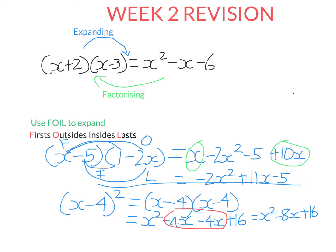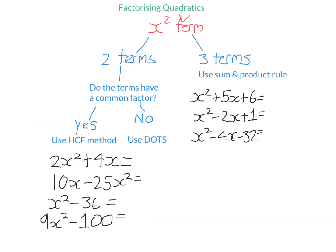Let's look now at the opposite of that, which is factorising. We need to be able to factorise quadratics. A quadratic is an expression with an X squared term. So how do you factorise them? It depends on the type of quadratic — whether it has two terms or three terms. If the quadratic has three terms, there's only one method: the sum and product rule. If you have a quadratic with two terms, ask yourself: is there a common factor? If there is, use the highest common factor method. If there's not, use difference of two squares.